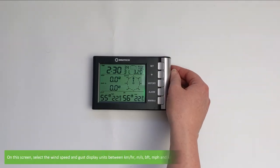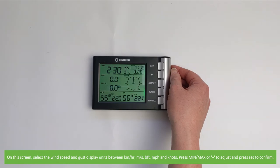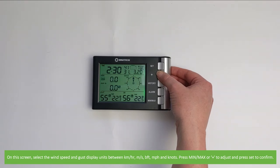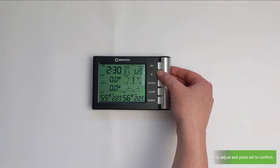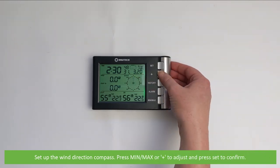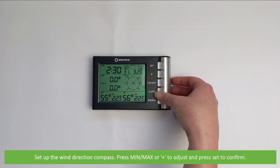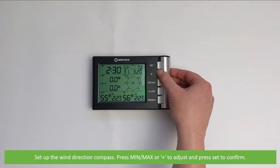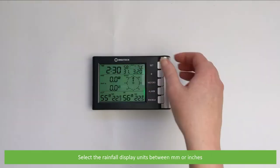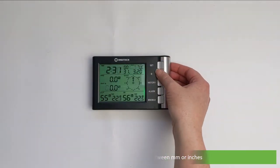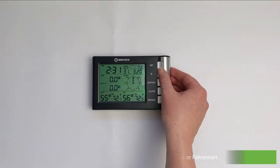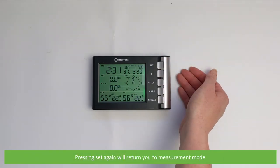On the screen select the wind speed and gust display units between kilometers per hour, meters per second, the Beaufort scale, miles per hour and knots. Press min max or plus to adjust and Set to confirm. Set up the wind direction compass. Press min max or plus to adjust and Set to confirm. Select the rainfall display units between millimeters or inches. And lastly select your temperature scale between Celsius or Fahrenheit. Pressing Set again will return you to measurement mode.